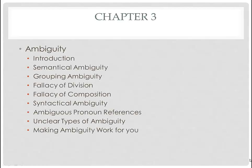We now turn to ambiguity. An ambiguous claim is a claim that can be interpreted in more than one way, and whose meaning is not made clear by the context. So a word, phrase, or sentence is ambiguous when it has more than one meaning.